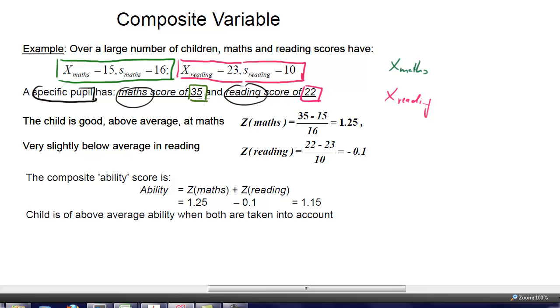We want to know how does that place that child overall. In order to combine these, they may both be measured in the same units, but you can see they are on quite different scales. So reading scores tend to be much higher. The point is we can create composite variables even if you have different scales.